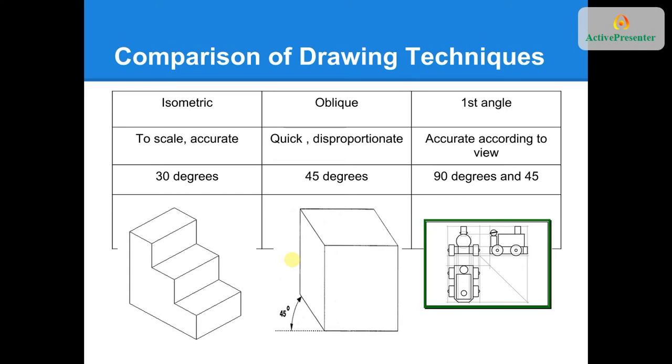Lastly, our first angle orthographic or third angle orthographic projections. You can see we have a train set there. It's shown as the front, the left, and the top view. You'll notice there's a 45 degree line in there as well. We'll talk more about that when we get to first and third angle.